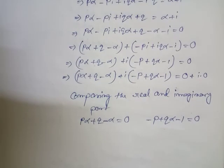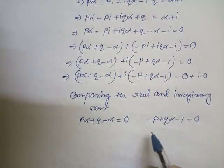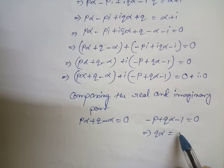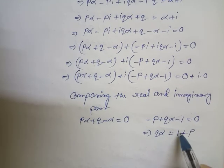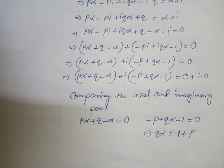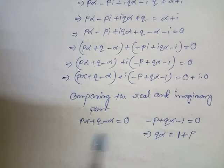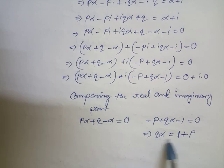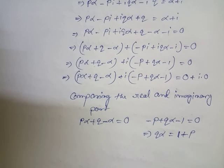From the imaginary part equation, qα = 1 + p. Taking 1 to the other side gives us our proof. We didn't need to use the real part equation — just the imaginary part was sufficient. So the answer is: qα = 1 + p. This completes the proof.